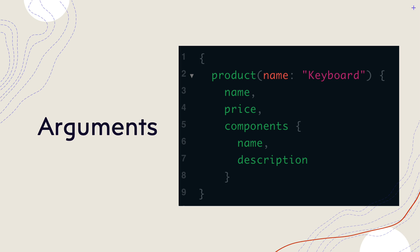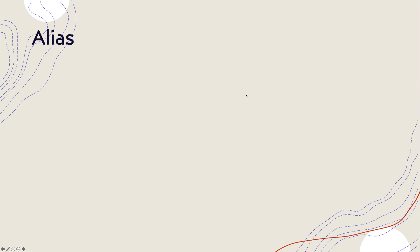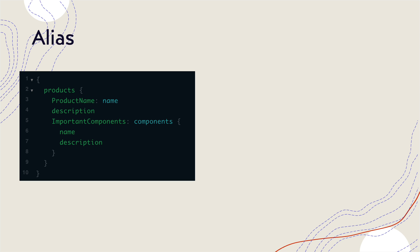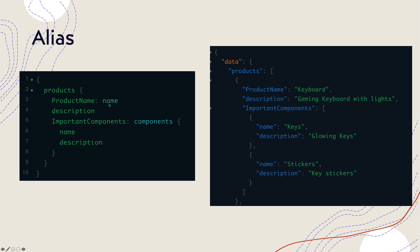There are situations where your client might require the product's field name with a different name. For example, the name field can be something like product name, and similarly components can be like important components. If you want to change the field name to your own custom naming, you can use what is called an alias in GraphQL. You can specify the query with an alias name like product name colon followed by the actual field which is the name field, and similarly the components field is aliased with the name important components.